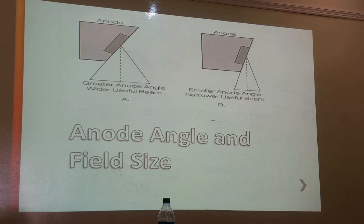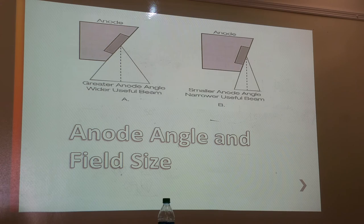Regarding anode angle and field size: without collimation, the greater the anode angle, the wider the x-ray beam. The less the angle, the narrower the beam. That's a direct relationship.